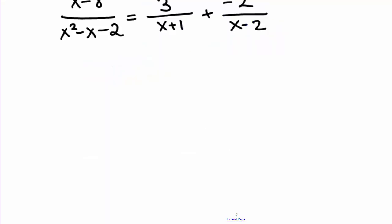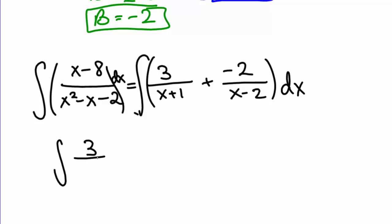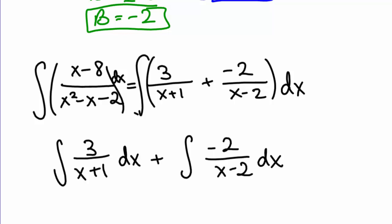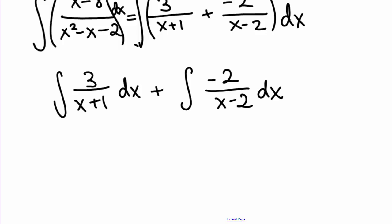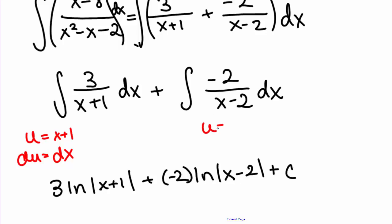This means our original integral can now be computed by integrating these expressions instead. We can do each integral separately since there's an addition sign between them. Technically, we use u equals x plus 1 for the first, so du equals dx, and that gives 3 natural log of the absolute value of (x plus 1). For the second, we use u equals x minus 2, du equals dx, giving negative 2 natural log of the absolute value of (x minus 2) plus C.